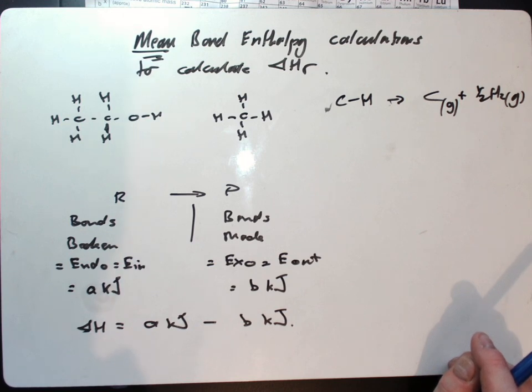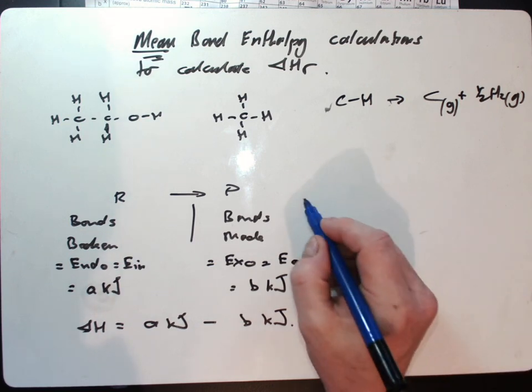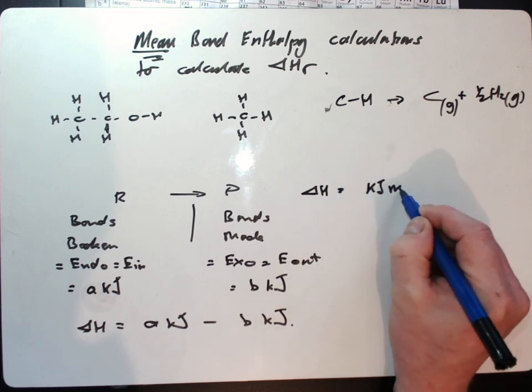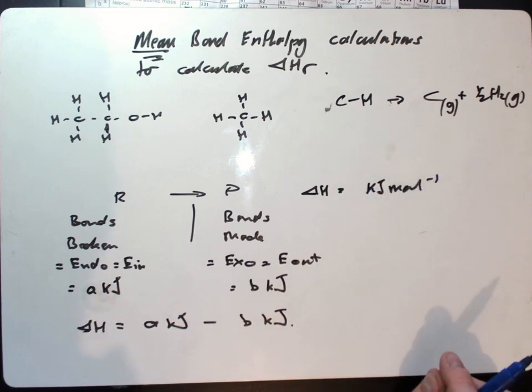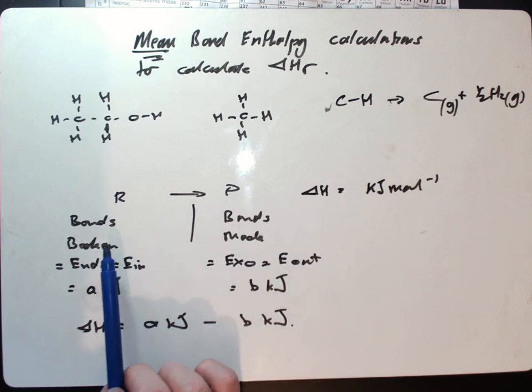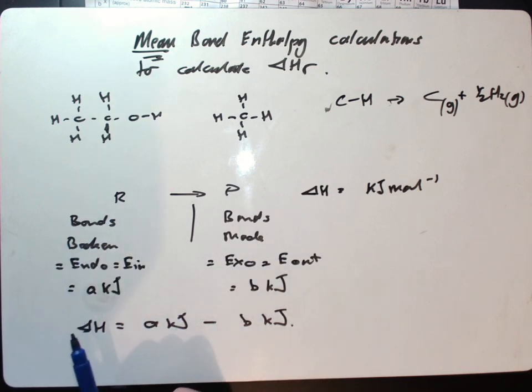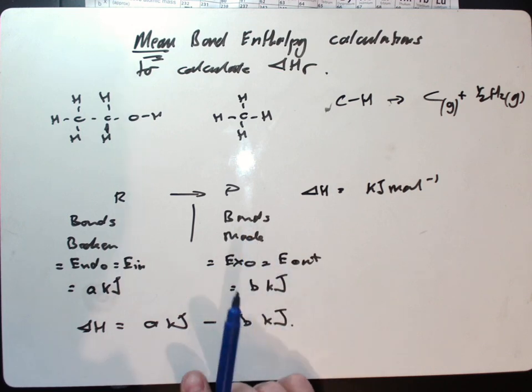So how do we use them to work out the overall energy change in a reaction, or the delta H in kilojoules per mole? Well, in a reaction, we have to first break bonds. Those atoms, after the bonds have been broken, will rearrange themselves, and new bonds will be formed in our products.